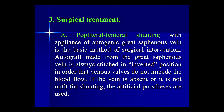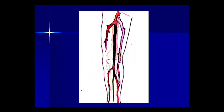Third — surgical treatment. Popliteal-femoral shunting with application of the autogenic great saphenous vein is the basic method of surgical intervention. The autograft made from the great saphenous vein is always stitched in inverted position so that venous valves do not impede blood flow. If the vein is absent or unfit for shunting, artificial prostheses are used.